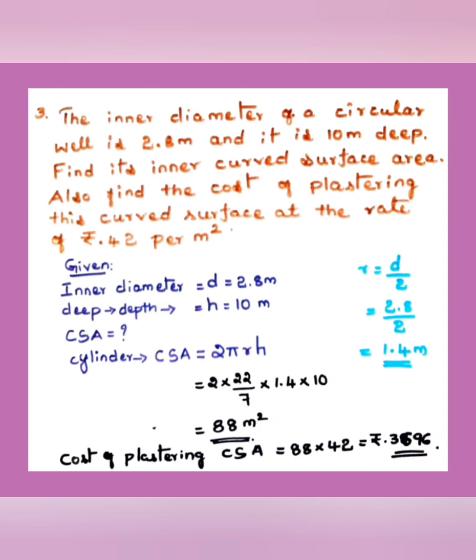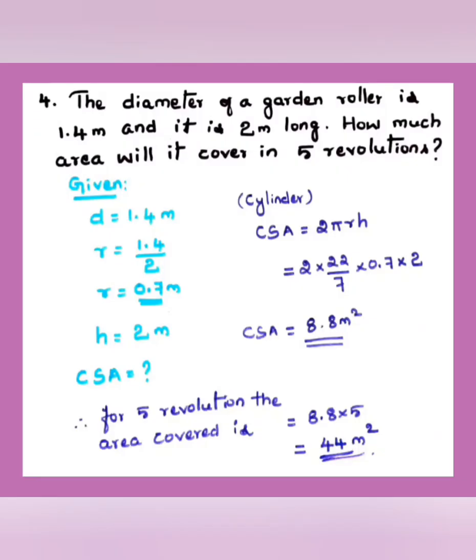These mensuration sums are very easy provided you remember the formulas. Practice until the formulas are registered in your mind. Each person can find their own way to remember them. For example, for a cylinder CSA is 2πrh — only r and h involved. For TSA, add πr² to that. For a sphere, both CSA and TSA are 4πr² — easy to remember.